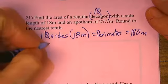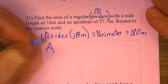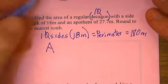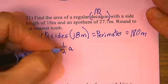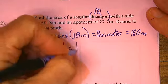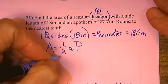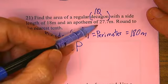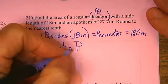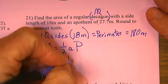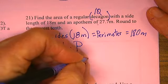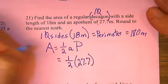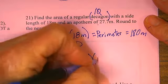The formula for area of a regular polygon is one half times the apothem times the perimeter. I'm given the apothem of 27.7 meters. One half times 27.7 times 180.